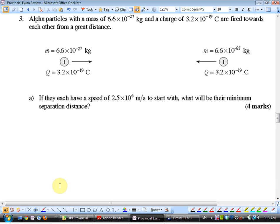Alpha particles with a mass and charge are fired towards each other from a great distance. They're both positively charged, will they attract or repel? Repel. If they each have a speed to start with, what will be their minimum separation distance? They each have kinetic energy. The closer they move together, the more that kinetic energy gets turned into electric potential energy. When they come to a stop, their minimum separation distance, that's when all of their kinetic energy has become electric potential energy.